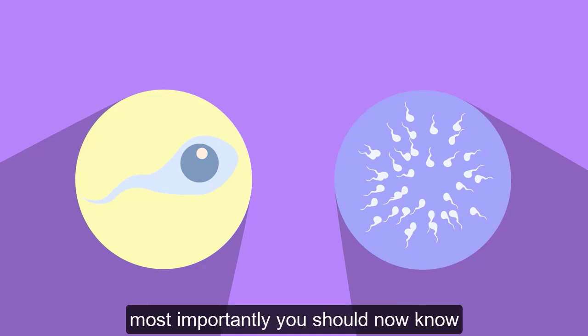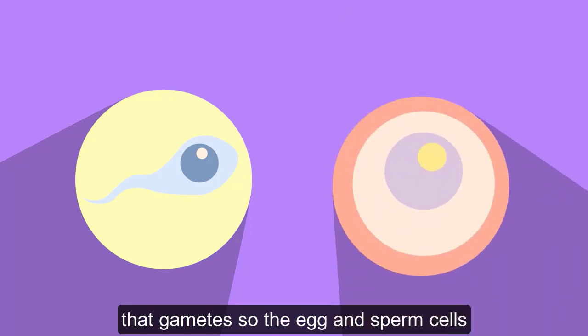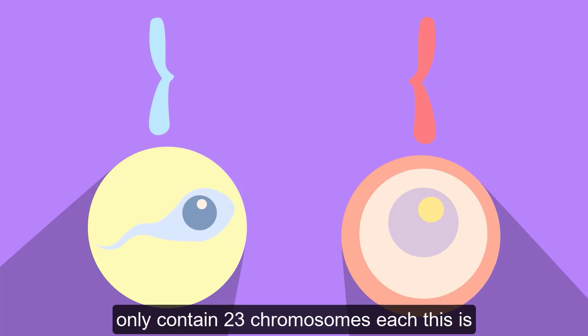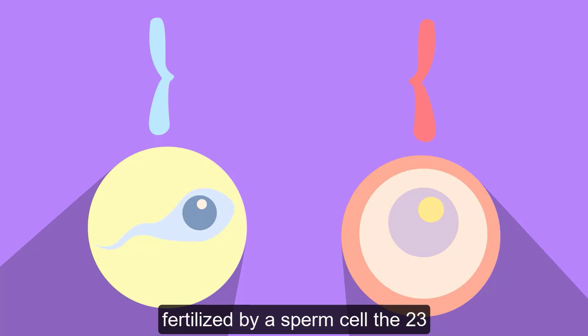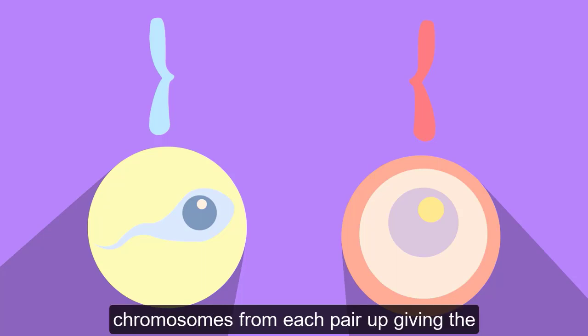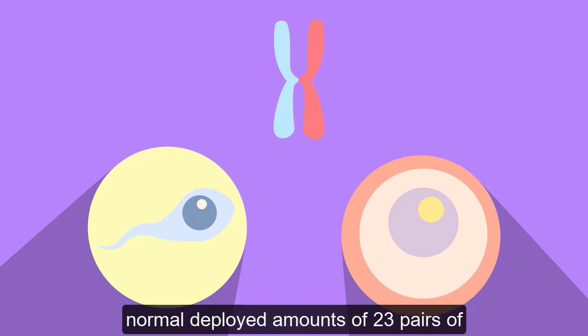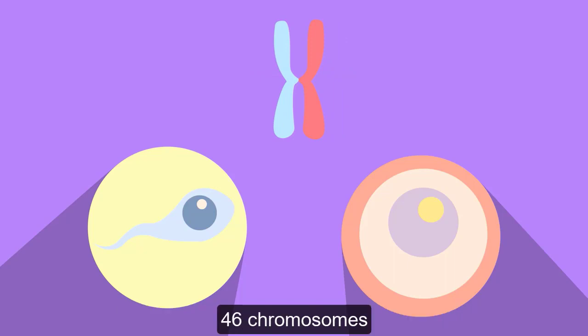And most importantly, you should now know that gametes, so the egg and sperm cells, only contain 23 chromosomes each. This is known as haploid. When the egg is fertilized by a sperm cell, the 23 chromosomes from each pair up, giving the normal diploid amounts of 23 pairs of 46 chromosomes.